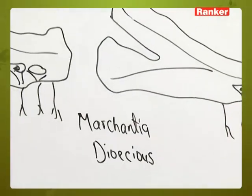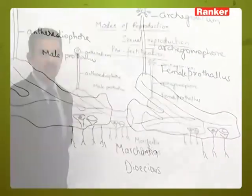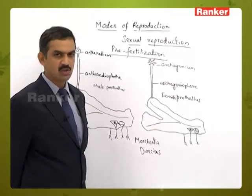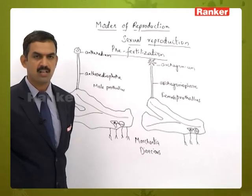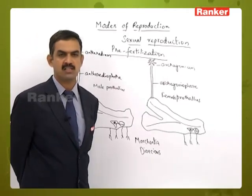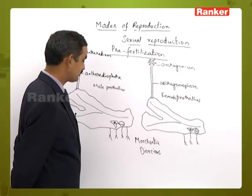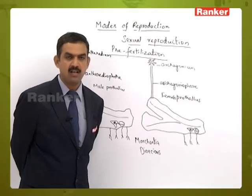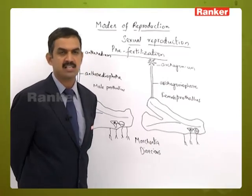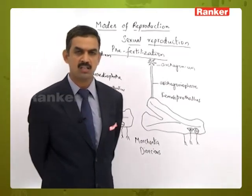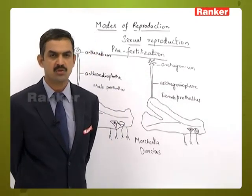Dioecious nature can also be seen in higher plants. In angiospermic plants like coconut, both sex organs are present on the same plant, making coconut an example of monoecious condition. Whereas in plants like Vallisneria and papaya, the sex organs are present on different plants, so those are examples of dioecious condition.